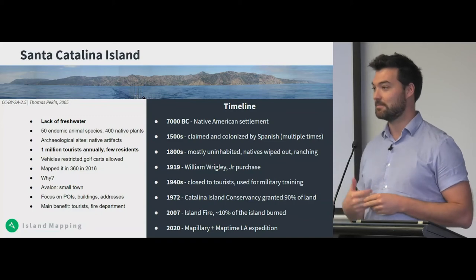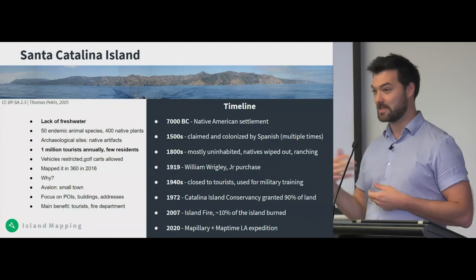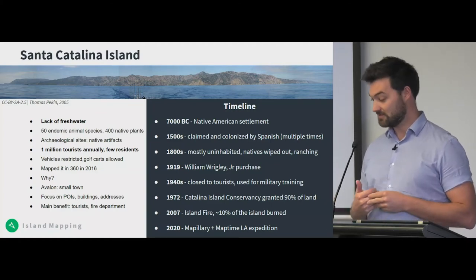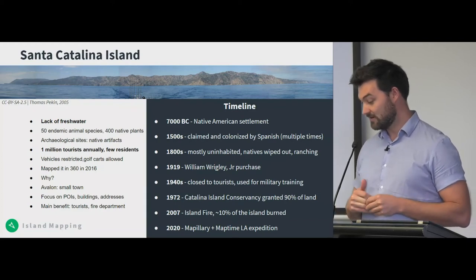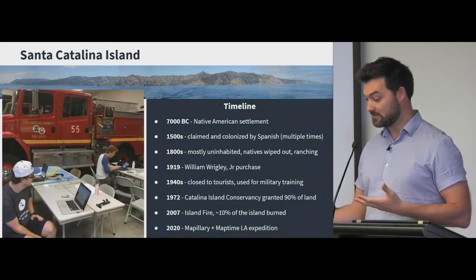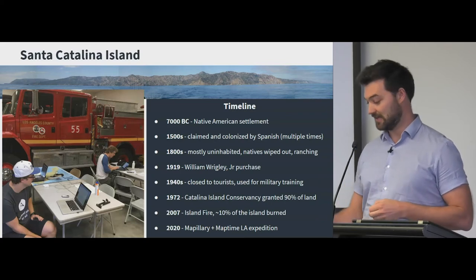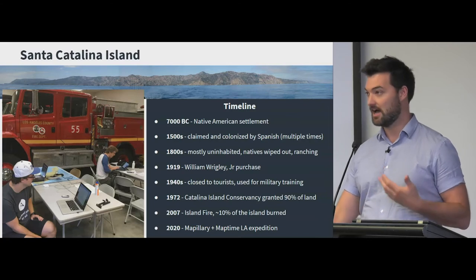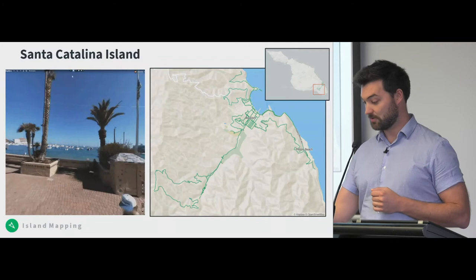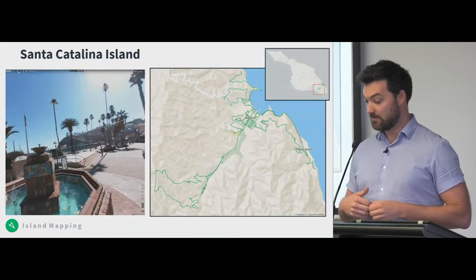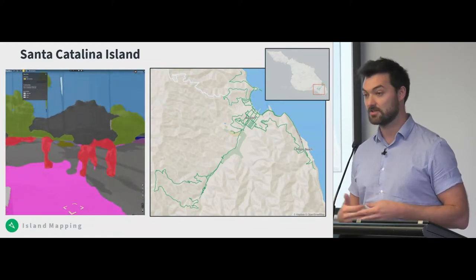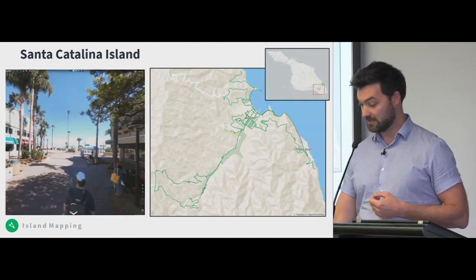The timeline of the island might look very familiar — settled thousands of years ago by Native Americans, later colonized, with most natives now entirely gone. The land was privatized, much of it is now a nature conservancy, and it was ravaged by grass fires. We set up base in the fire station and with Map Time LA we went out to capture street-level images and collect data like addresses on houses and points of interest. We captured most of the center of Avalon as well as surrounding roads. Mapillary also classifies every pixel in the images into categories like vegetation, buildings, and pedestrian areas.